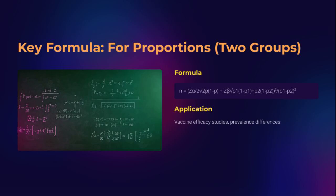When comparing two groups based on percentages — like disease prevalence between vaccinated and unvaccinated groups — this proportions formula is essential. It adjusts for pooled variance from both groups and their expected proportions. When the expected difference between groups is small, the required sample size rises sharply. For example, testing a new vaccine with a 5% improvement over the current standard may require hundreds, maybe thousands of participants, depending on your desired power and significance.